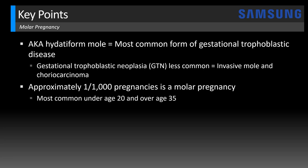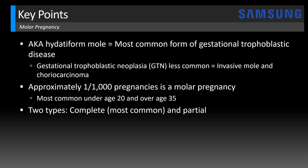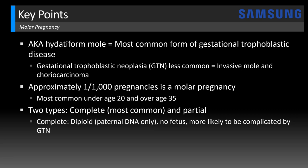Some risk factors are related to patient age — we see molar pregnancies more commonly under age 20 and over age 35; this patient was in her early 20s. There are two types: the complete type, which is the most common and which we saw in this case, and the partial type. The complete type has a diploid chromosomal pattern composed of paternal DNA only, and you won't see any normal fetus. It's more likely to be complicated by gestational trophoblastic neoplasia, so these patients need to be followed closely.